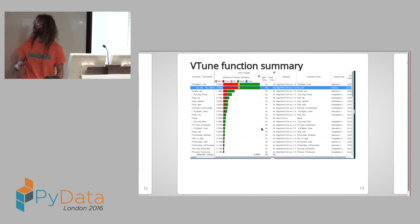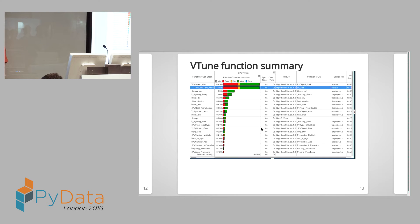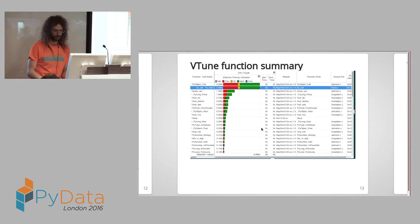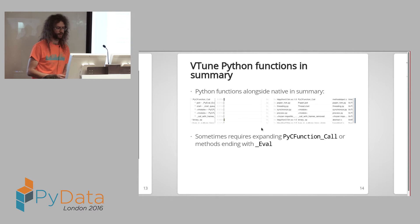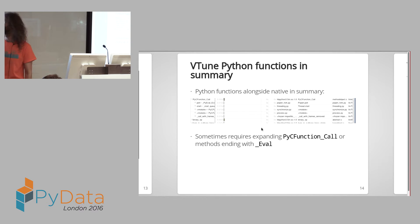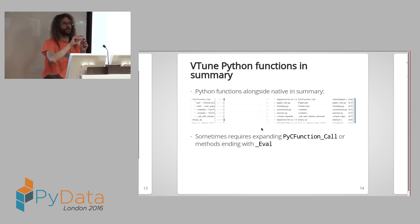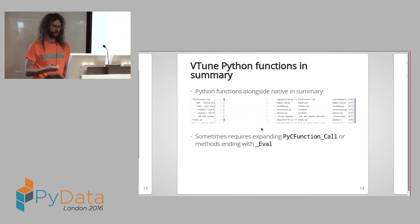You can then drill down by looking at the function summary, which gives you a list of individual functions and how well the CPU was utilised during each. In this particular profile, not many Python functions were showing near the top, but scrolling down you could see some Python functions. Sometimes you need to expand a native method like a PyC function call or something ending in eval to see the Python code.